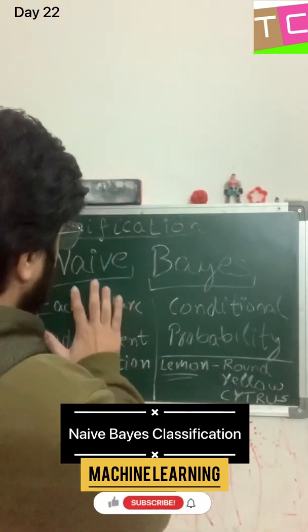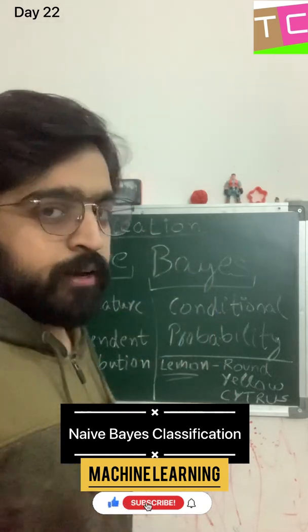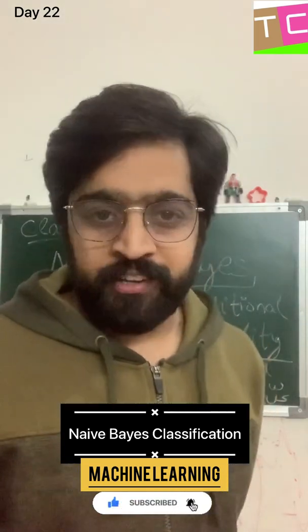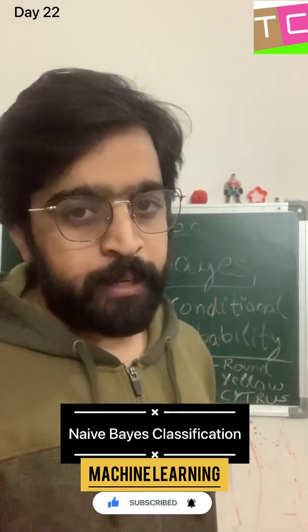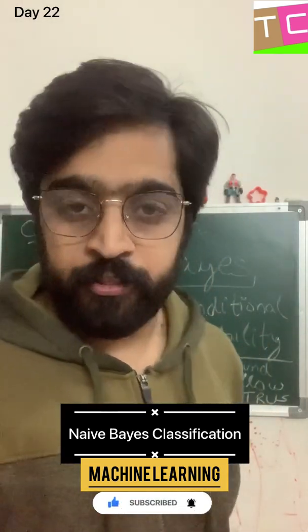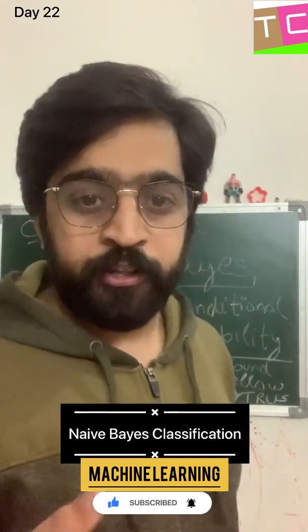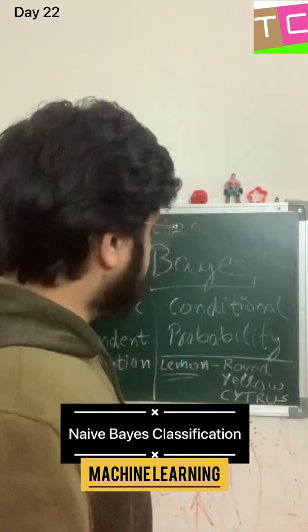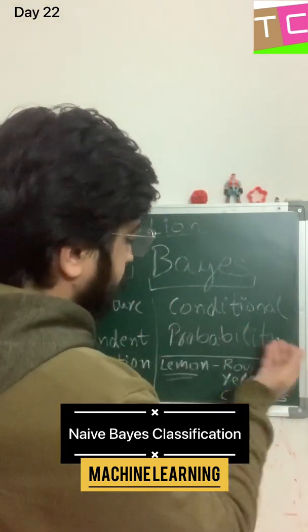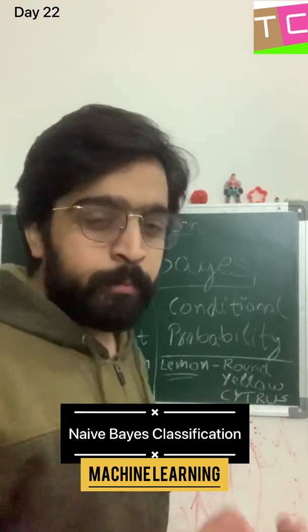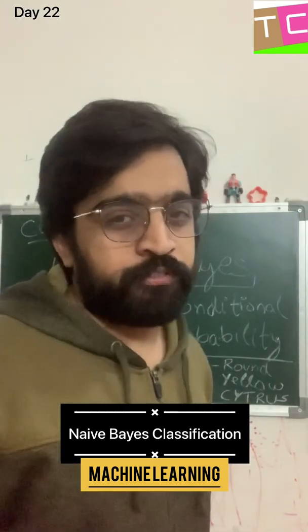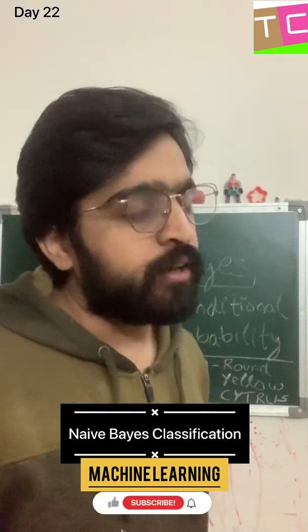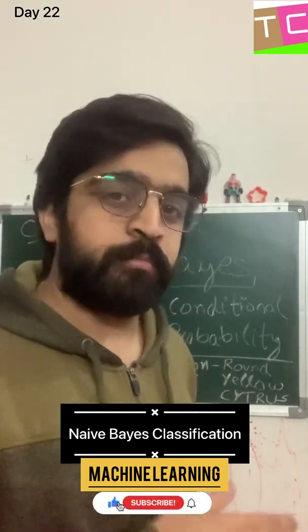So first of all, naive and Bayes. Bayes is a person who coined this term in his name as Bayesian theorem. The theorem states that it concludes a conditional probability — if this happened, this might also happen; if this happened, this might happen.